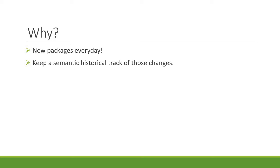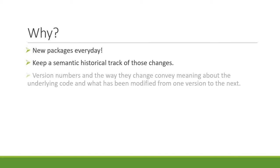Under semantic versioning, version numbers and the way they change convey meaning about the underlying code and what has been modified from one version to the next. By doing so, it becomes easy to communicate your intentions to the users of your software.